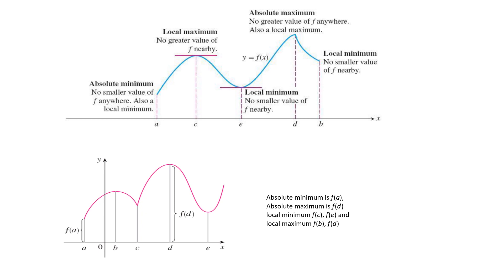Looking at this diagram, we have some points: a, c, e, d, and b. At the first point a, there is no smaller value for the function, so we denote point a as the absolute minimum. Moving to the next point c, we have a peak, so this point we call local maximum.